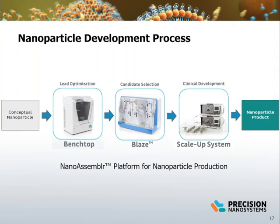Lead candidate development can be done rapidly at single-digit milliliter scale on the NanoAssembler bench top. The exact process parameters can be transferred to the NanoAssembler Blaze, a continuous flow manufacturing system, to produce nanoparticles in the tens to hundreds of milliliters in volume. Finally, to scale up to clinical manufacturing volumes, this is achieved by direct scaling of the process parameters to the scale-up system with parallel mixers to produce liters of nanoparticle formulation.